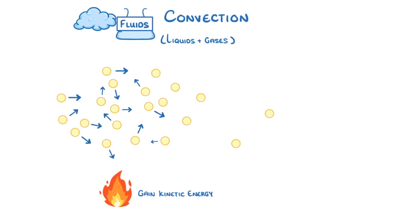Convection on the other hand occurs mainly in fluids, and remember fluids can refer to anything that can flow, so both liquids and gases. Because the particles in fluids aren't fixed, once they're heated and they gain kinetic energy, they all move around faster.